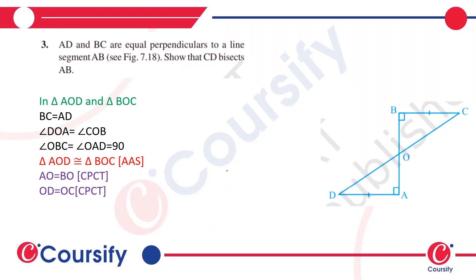AD and BC are equal perpendiculars to a line segment AB. Show that CD bisects AB. So we have two right angle triangles, triangle AOD and triangle BOC.